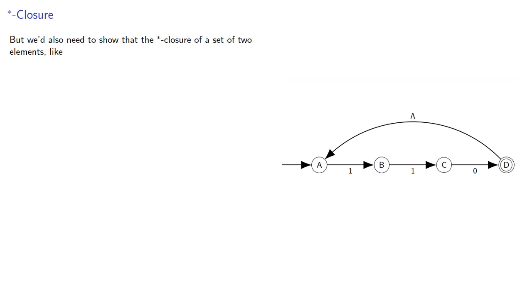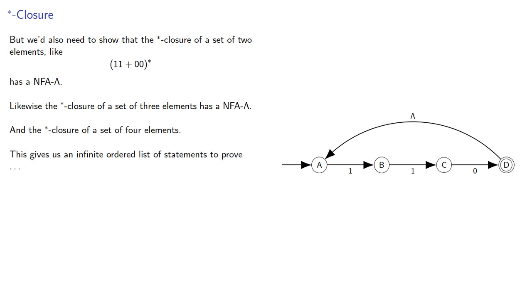But we'd also need to show that the star closure of a set of two elements has an NFA lambda, and likewise the star closure of a set of three elements, and the star closure of a set of four elements, and this gives us an infinite ordered list of statements to prove, so let's prove it by induction.